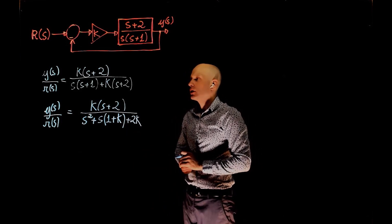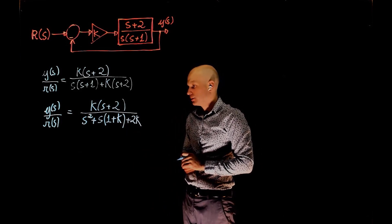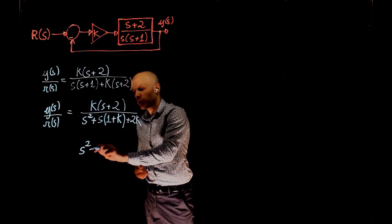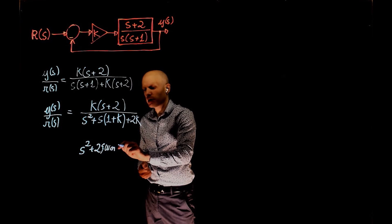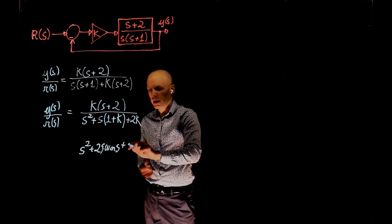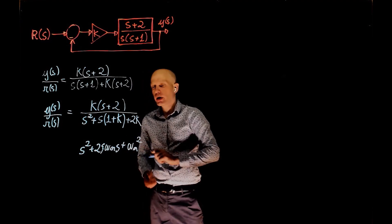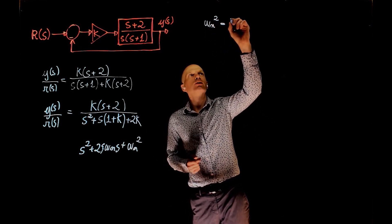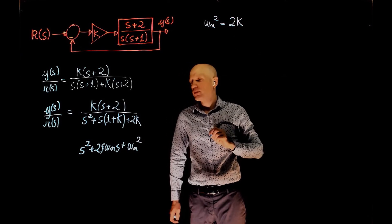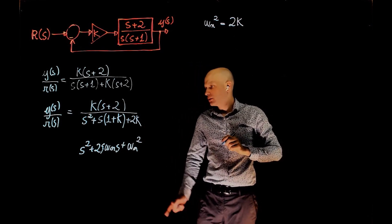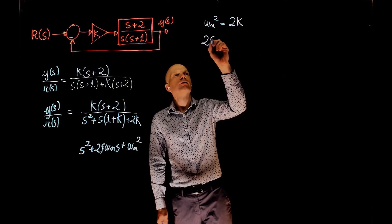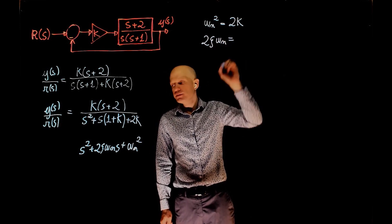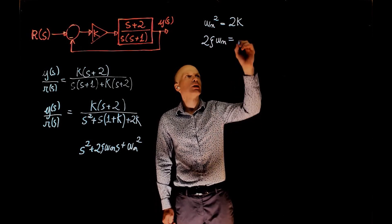Now, what is the value of k that gives an overshoot of 7%? From the standard second-order formulation, written as s² + 2ζω_n·s + ω_n², we know that ω_n² = 2k, and we know that 2ζω_n = 1 + k.